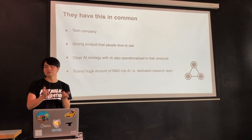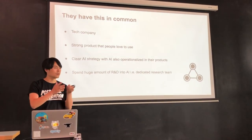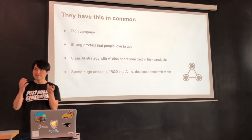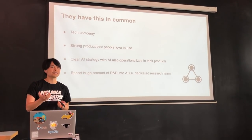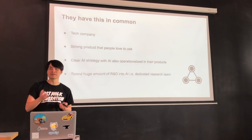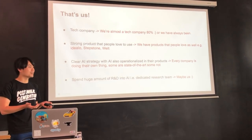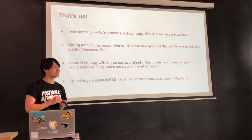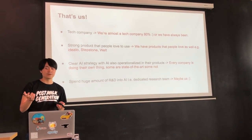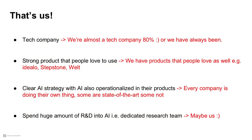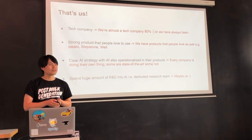Why do these companies have so much in common? They have very strong products that people love — for example, Google has Gmail and Maps, Amazon has AWS. They have a clear AI strategy for how to use data in their products, and they spend a huge amount on R&D. For example, Amazon spends three billion dollars on R&D every year just on this topic. We at Axel Springer are almost a tech company — about 80% of our revenue is digital — and we have products people love like idealo, StepStone, and welt.